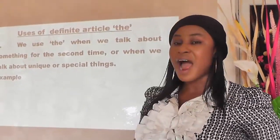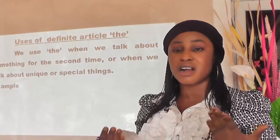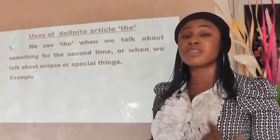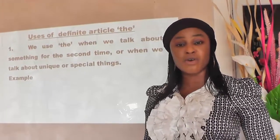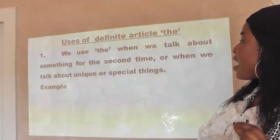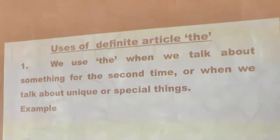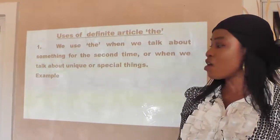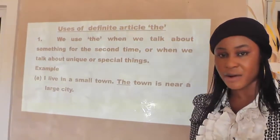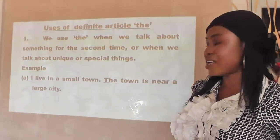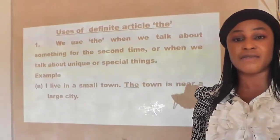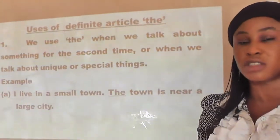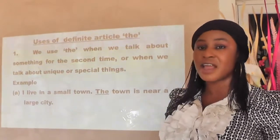Now, the uses of definite article 'the.' First, article 'the' is used before nouns — singular, plural, countable, or uncountable. Second, we use 'the' when we talk about something for the second time, or when we talk about a unique or specific thing. For example: 'I live in a small town. The town is near a large city.' The article 'the' in the second sentence gives more information about the small town.